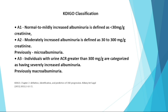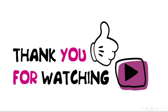The KDIGO classification of CKD albuminuria categories: A1 — normal to mildly increased albuminuria, defined as less than 30 mg per gram creatinine. A2 — moderately increased albuminuria, defined as 30 to 300 mg per gram creatinine, previously termed microalbuminuria. A3 — individuals with urine albumin-to-creatinine ratio greater than 300 mg per gram are categorized as having severely increased albuminuria, previously termed macroalbuminuria.